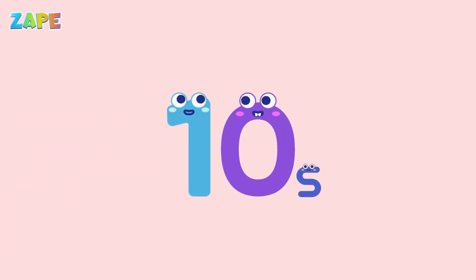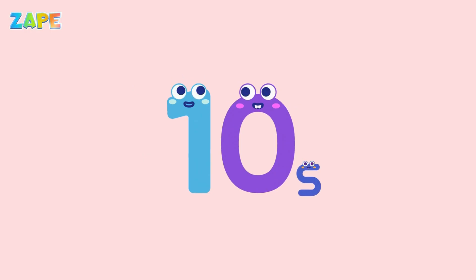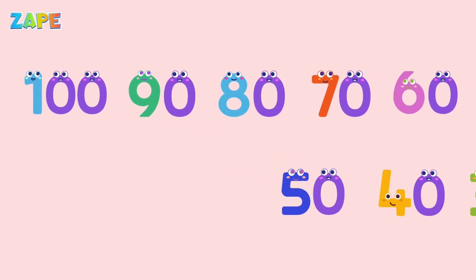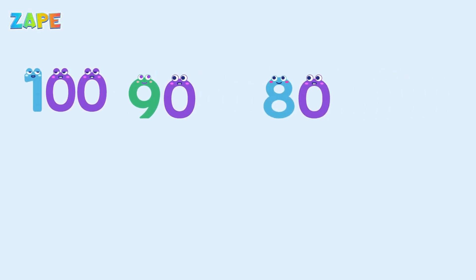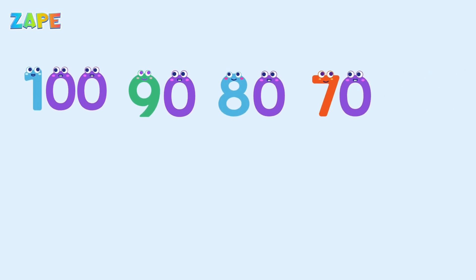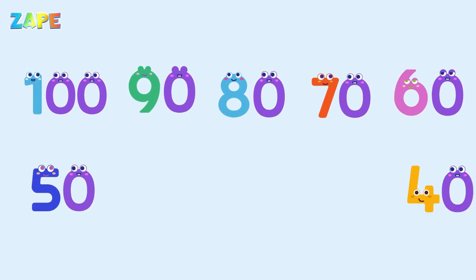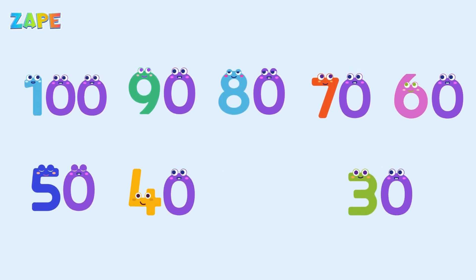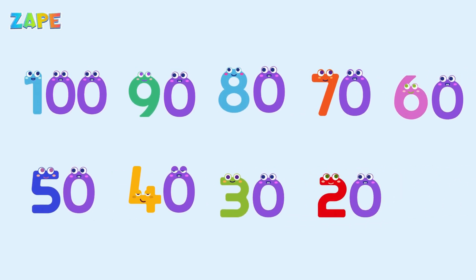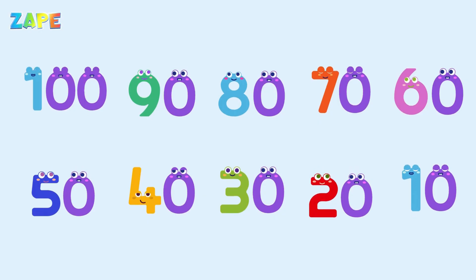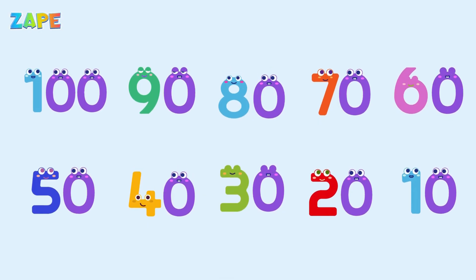Now we will count by tens. This is quick and fun. Let's count together. 100, 90, 80, 70, 60, 50, 40, 30, 20, 10. That was fast and fun. Great counting.